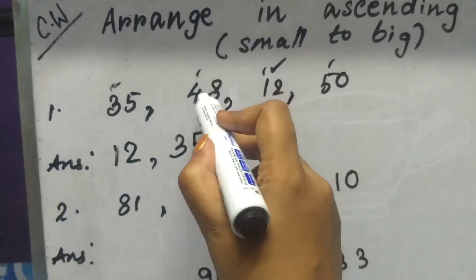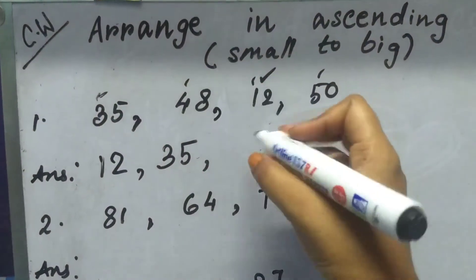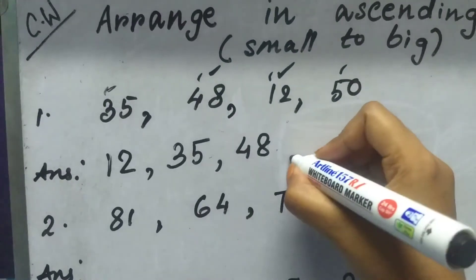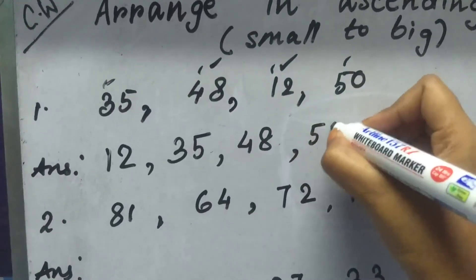Next, between these two numbers, 48 and the remaining is 50. So we will write 48, 50.